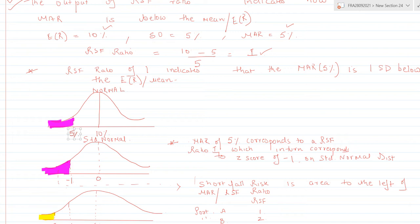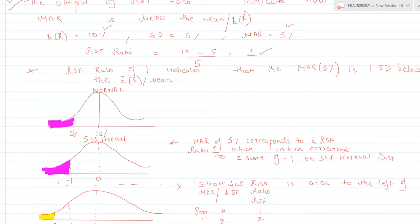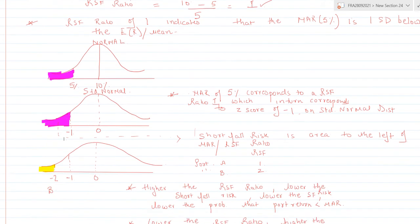The area to the left of the minimum acceptable return on the normal distribution basically indicates the probability that the portfolio return would be less than the minimum acceptable return — in other words, it indicates the shortfall risk. If we are able to minimize this area to the left of the RSF ratio, we would be minimizing the shortfall risk.